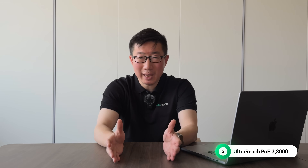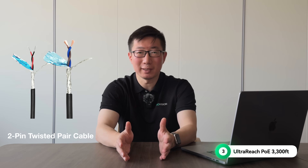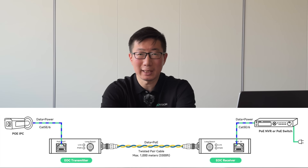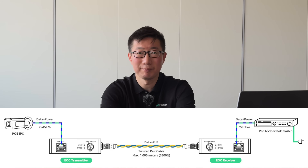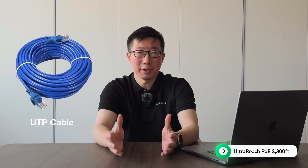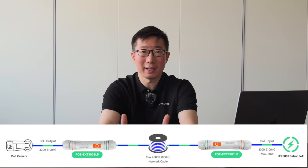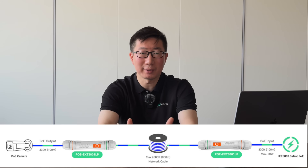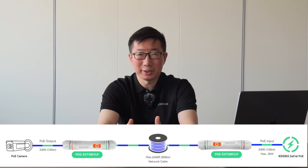A twisted-pair cable consists of two insulated copper wires twisted together to reduce electromagnetic interference and cross-talk from nearby cables or devices, and is commonly used in telecommunications and elevator signal transmission. UTP cables, or unshielded twisted-pair cables, are copper cables used for networking, made up of two or four pairs of twisted wires. The most common UTP cables are cat5e or cat6 network cables.